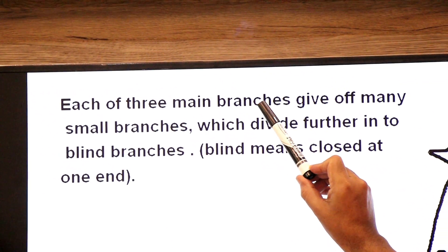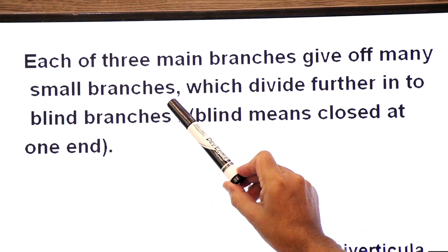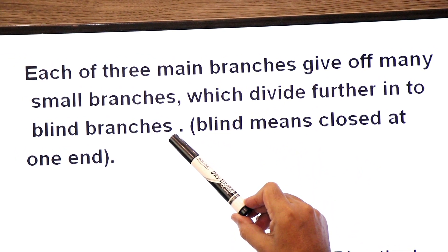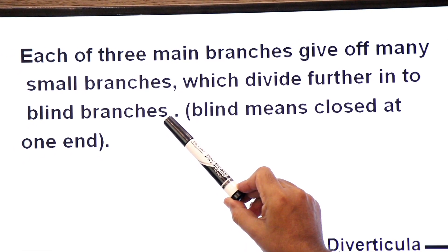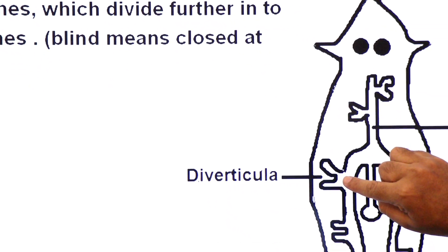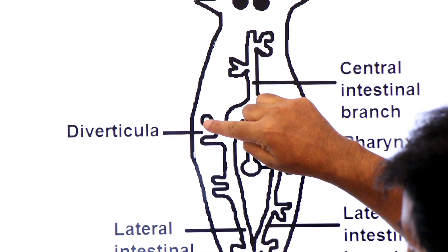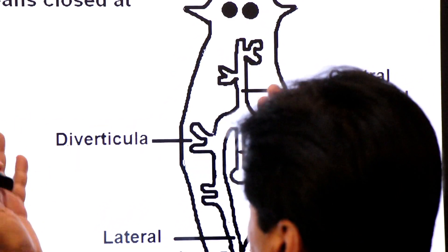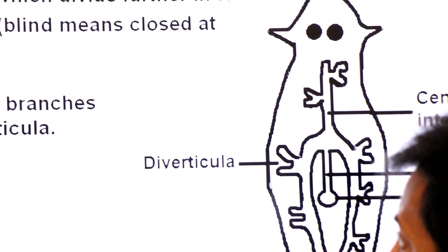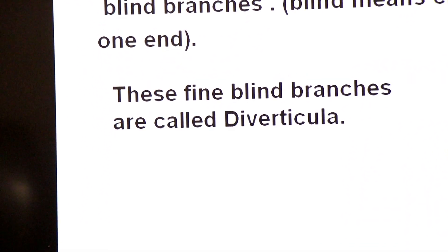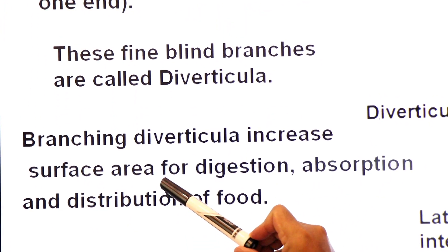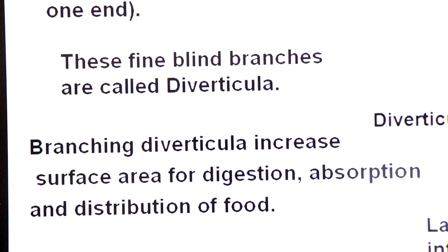Each of the main three branches gives off many small branches which divide further into blind branches. Blind means closed at one end — they are open from the inside but closed at one end. These fine blind branches are called diverticula. The function of diverticula is to increase surface area for digestion, absorption, and distribution of food.